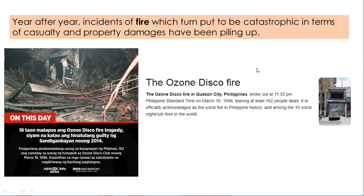We have here the Ozan Disco Fire. It is considered as one of the worst nightclub fires in the world. It happened on March 18, 1996, leaving at least 162 people dead. This is considered a disaster. Knowing that disaster came from hazard, let us recognize what fire hazard is.